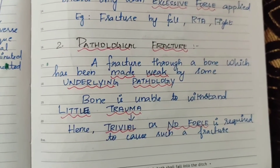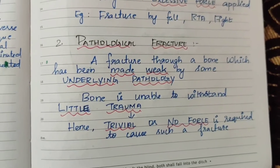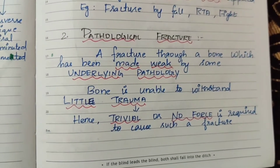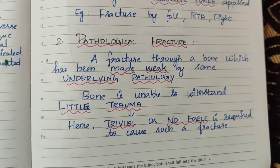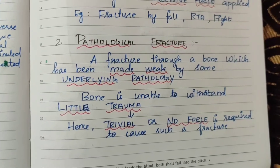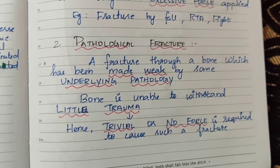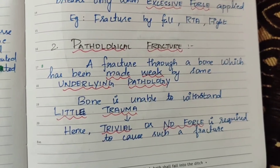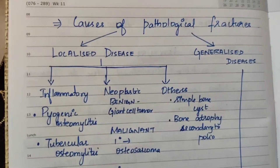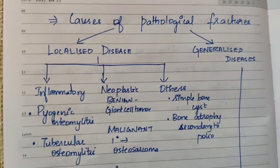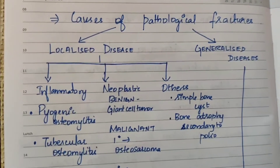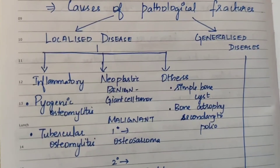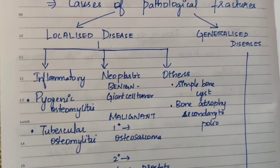No significant force is required to cause a pathological fracture — only a little force is needed for it to break. Causes of pathological fracture are divided into two types: localized disease and generalized disease.